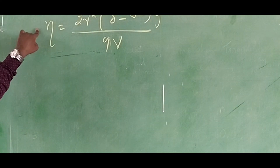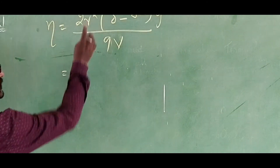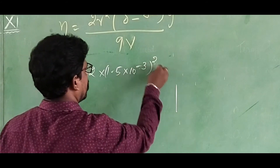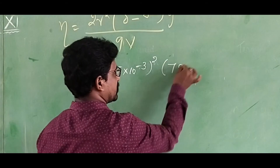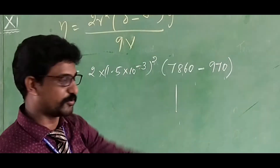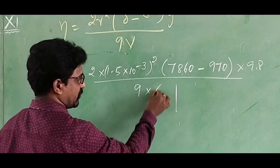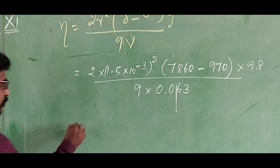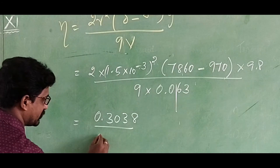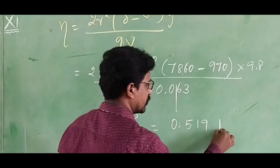Now the final calculation: the coefficient of viscosity of castor oil eta equals 2r squared into (rho minus sigma) into g divided by 9v. Here r is 1.5 × 10⁻³ meters, rho is 7860 kg/m³, sigma is 970 kg/m³, g is 9.8 m/s², and the mean terminal velocity v is 0.063 m/s. On solving, eta equals 0.3038 divided by (9 × 0.063), which gives eta approximately equal to 0.519 Newton-seconds per meter square.